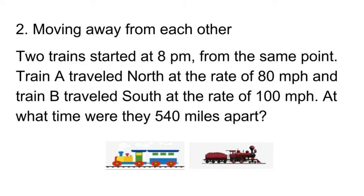Problem 2. Two trains started at 8 p.m. from the same point. Train A traveled north at the rate of 80 mph and train B traveled south at the rate of 100 mph. At what time were they 540 miles apart?